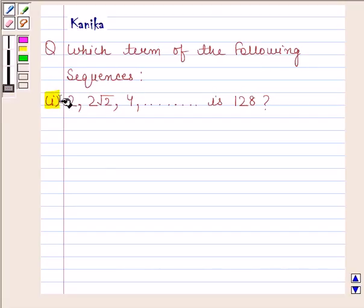The question says which term of the following sequence is: First part is 2, 2 root 2, 4 and so on is 128. Let's now begin with the solution.